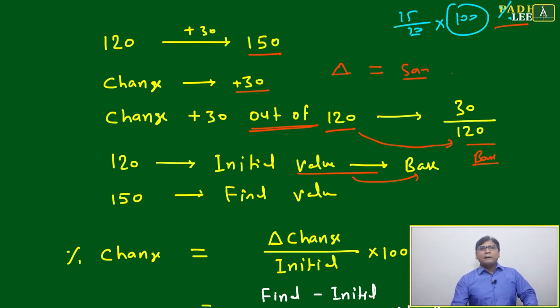Delta will be same but percentage value will change, right? Because one time you are going from 120 to 150, base will become 120. Another time you are coming down from 150 to 120, base will become 150. So percentage increase from 120 to 150 value will be different, and percentage decrease from 150 to 120 value will be different.